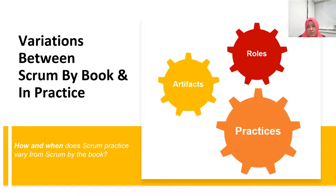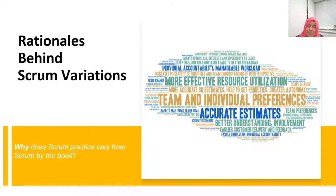While investigating why Scrum practice varies from Scrum by the Book, we found different rationales and motivations behind these variations. Some variations were based on need, choice, or context, while others emerged due to lack of clarity in theory. Team and individual preferences, effective resource utilization, organizational structure, and completion time are examples of reported rationales behind these variations.